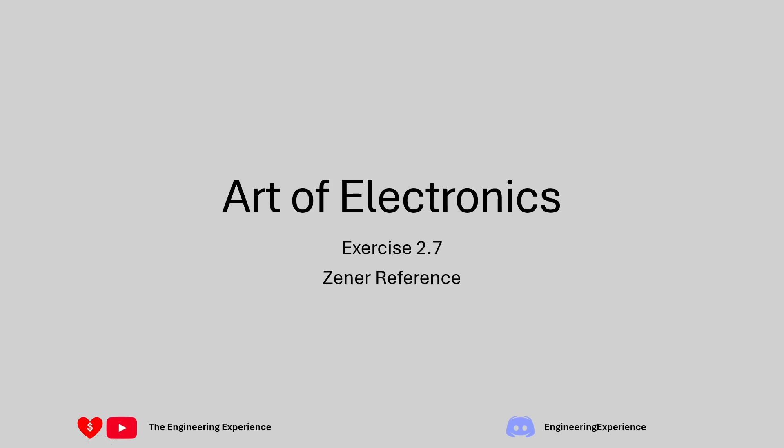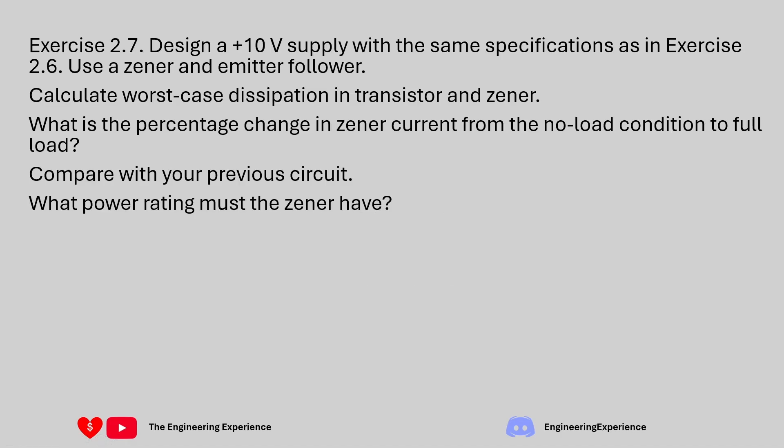In this exercise we are doing some comparisons to the last question, so make sure you check out that video as well - that's exercise 2.6. For the question we need to design a 10 volt supply with the same specifications as in exercise 2.6, using a Zener with an emitter follower. We need to calculate the worst case power dissipation in the transistor and the Zener, and work out the percentage change in the Zener current from no load to full load conditions. We also need to compare this circuit with the previous one and calculate the power rating the Zener must have.